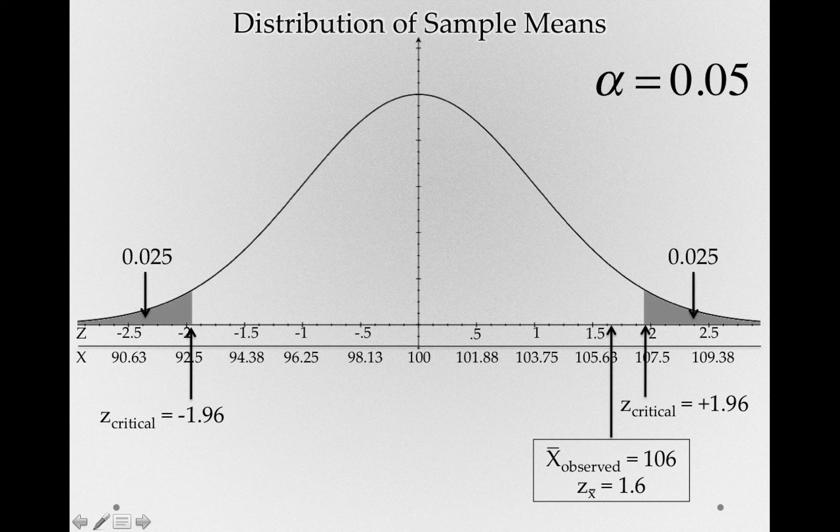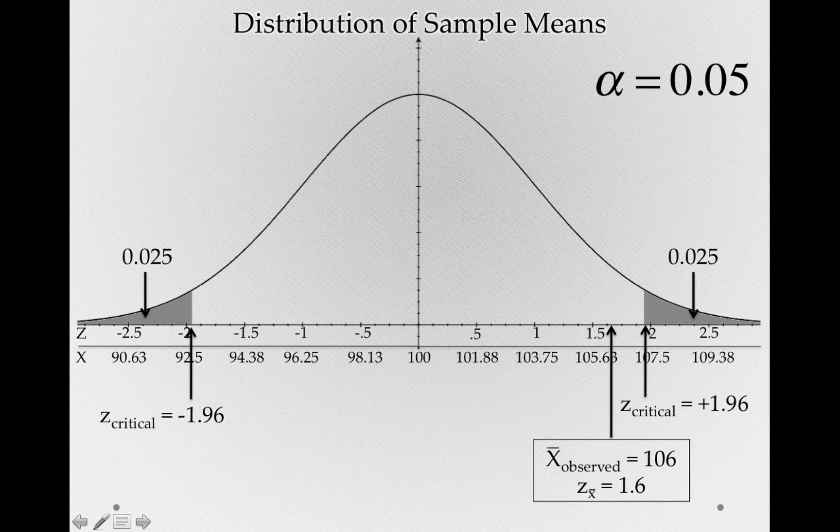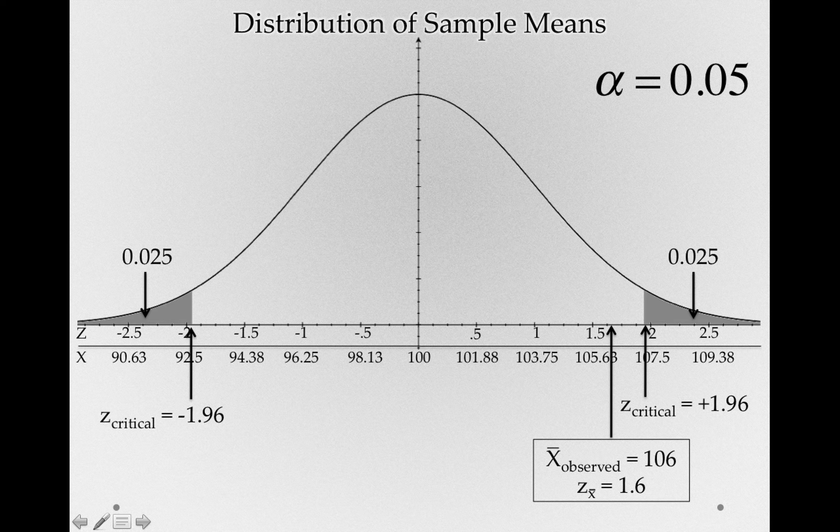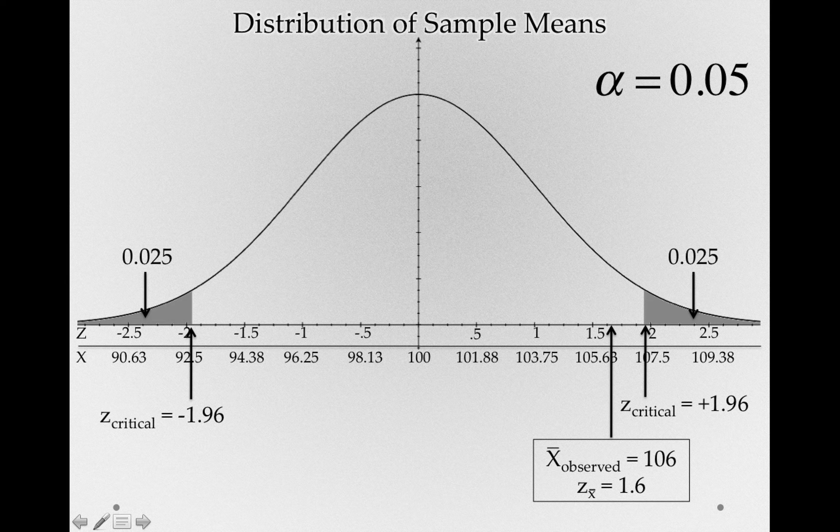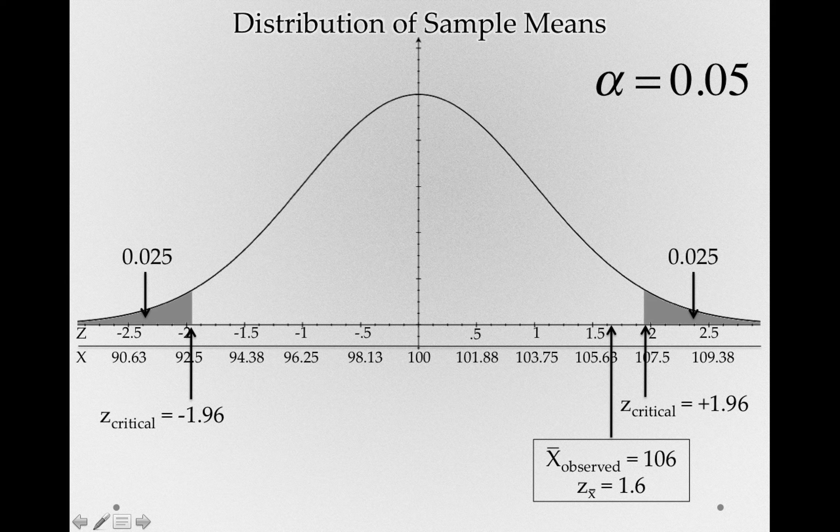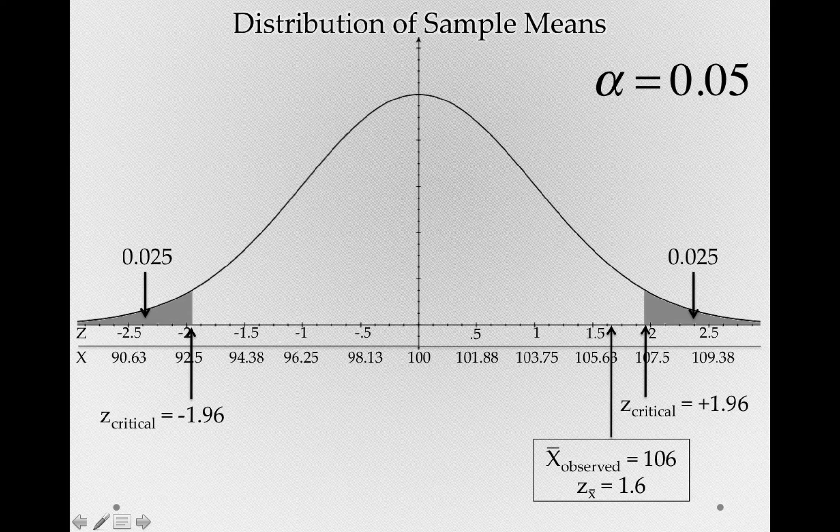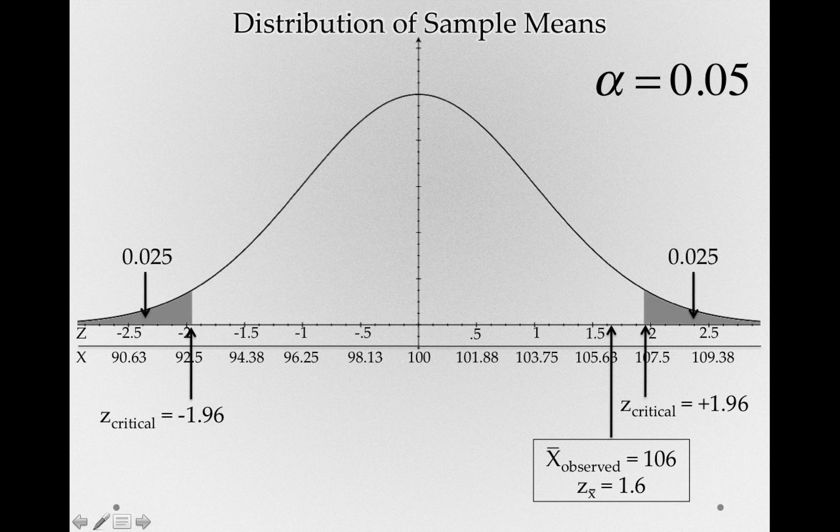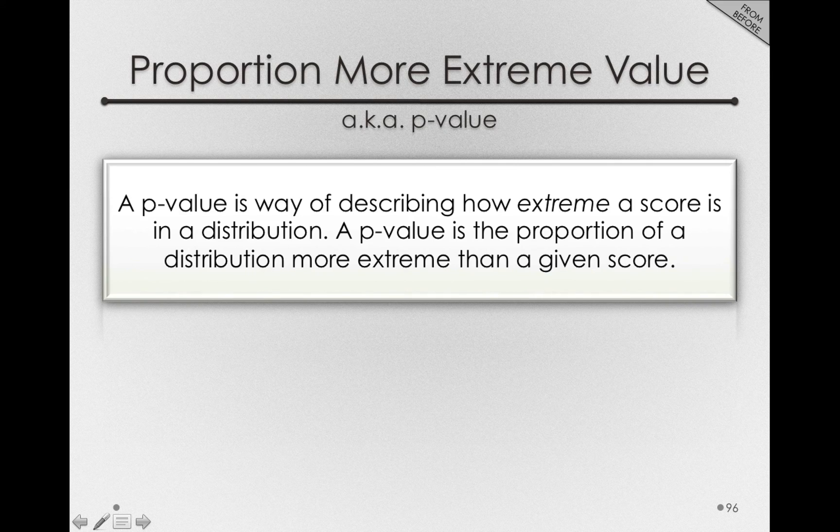Now I want you to see that there is another way we could have decided whether we landed ourselves in the critical region, in a way that's going to be more convenient going forward, since we'll work with many different types of test statistics. And the way we can do this is by using that proportion more extreme value.